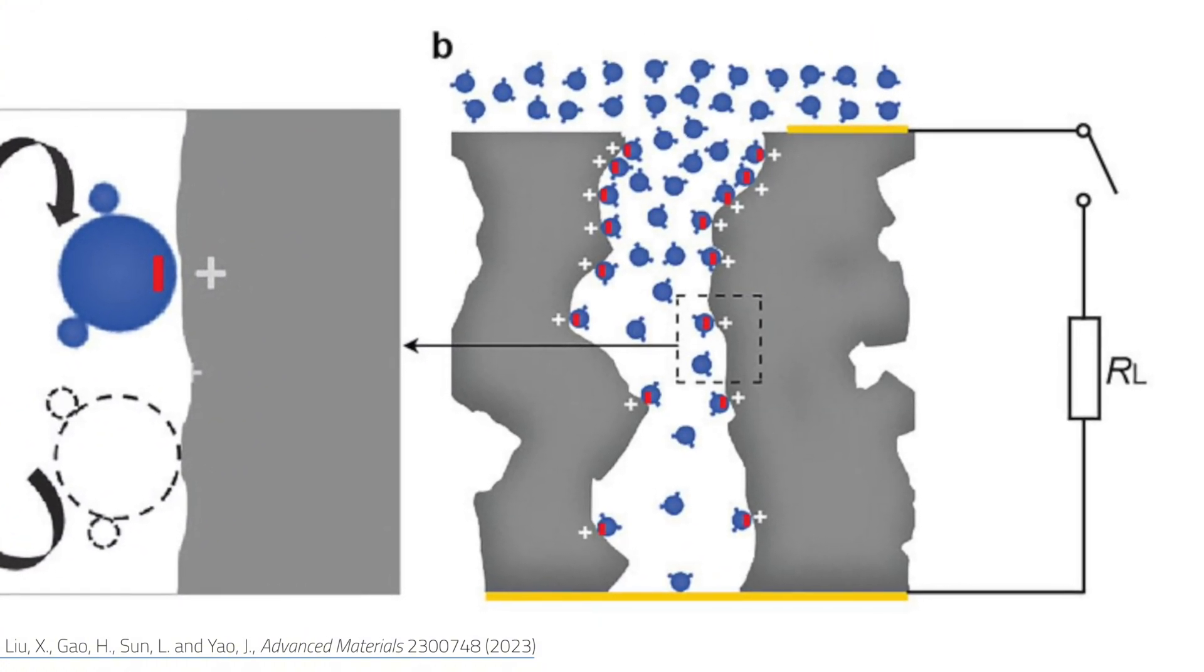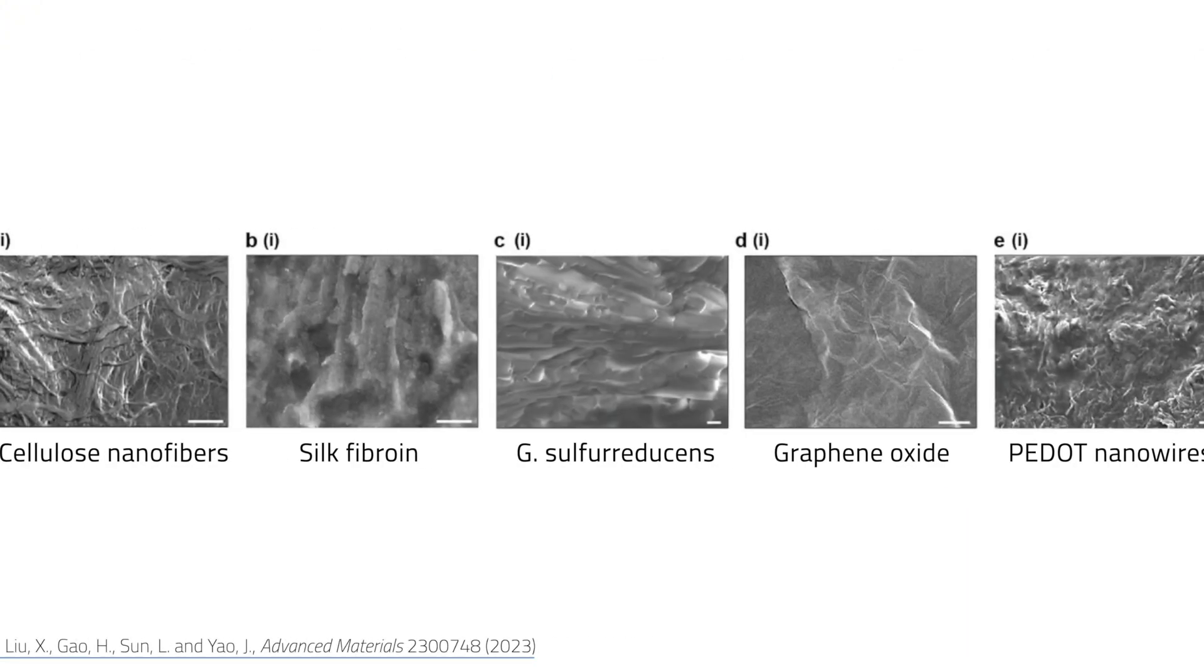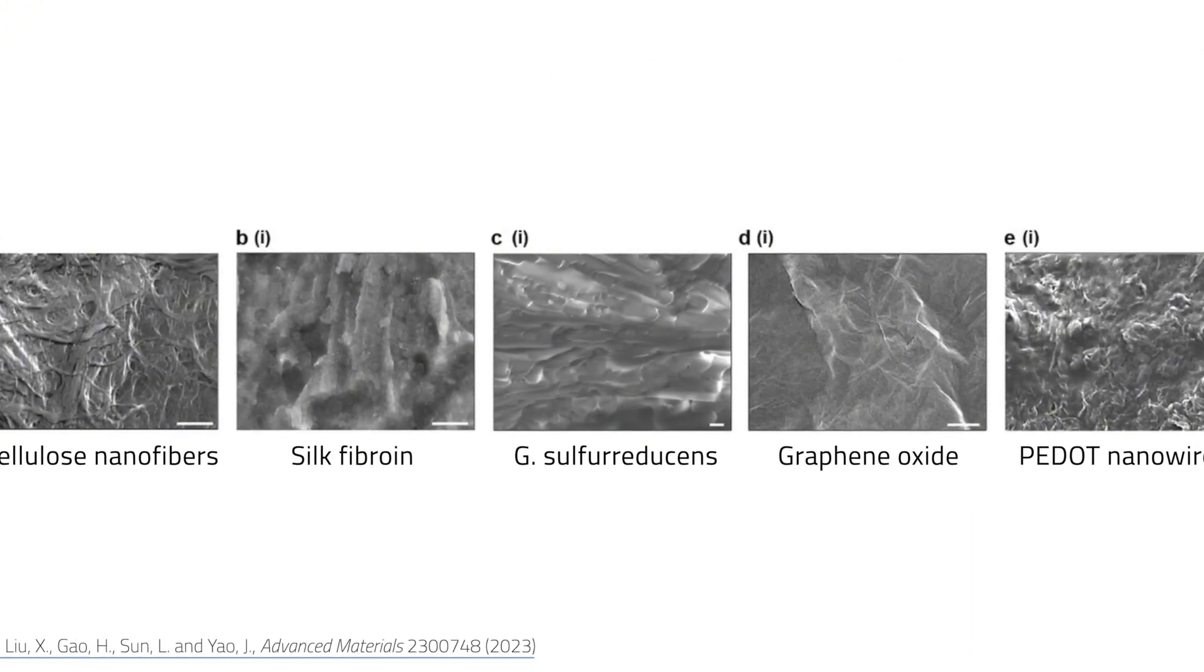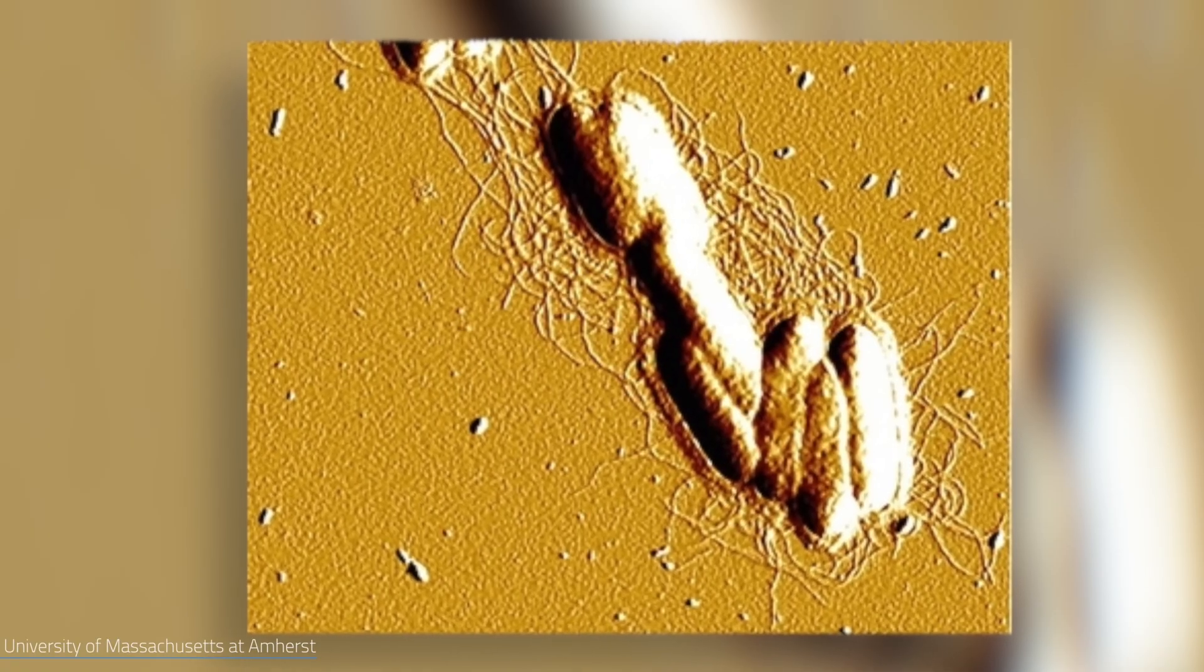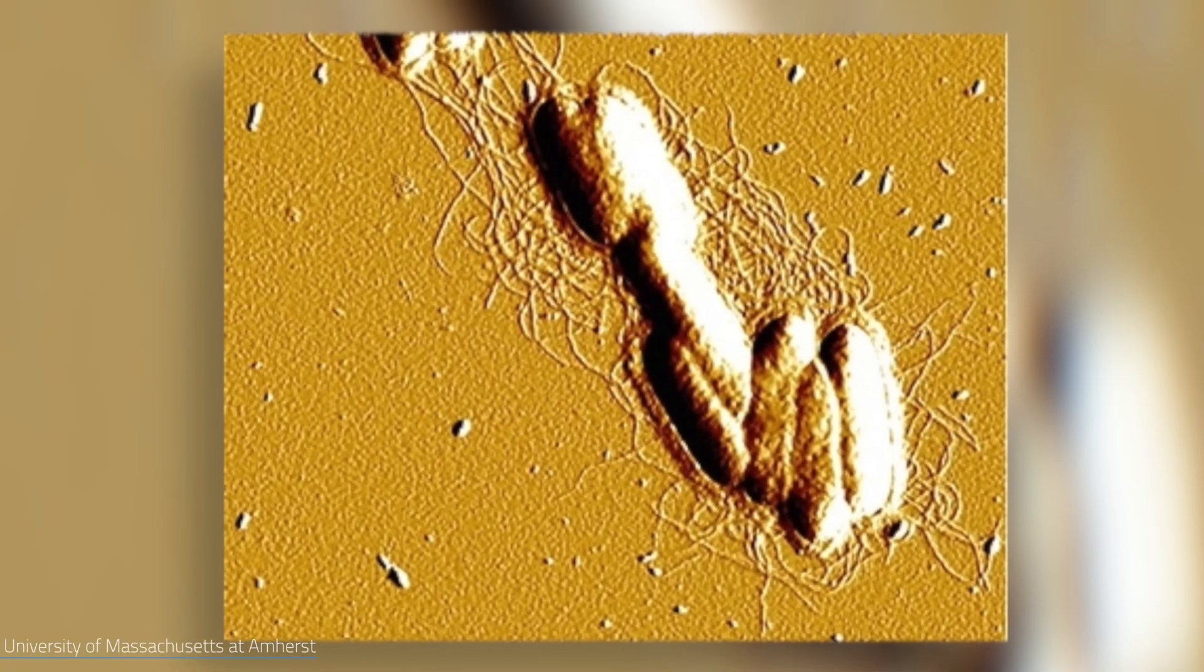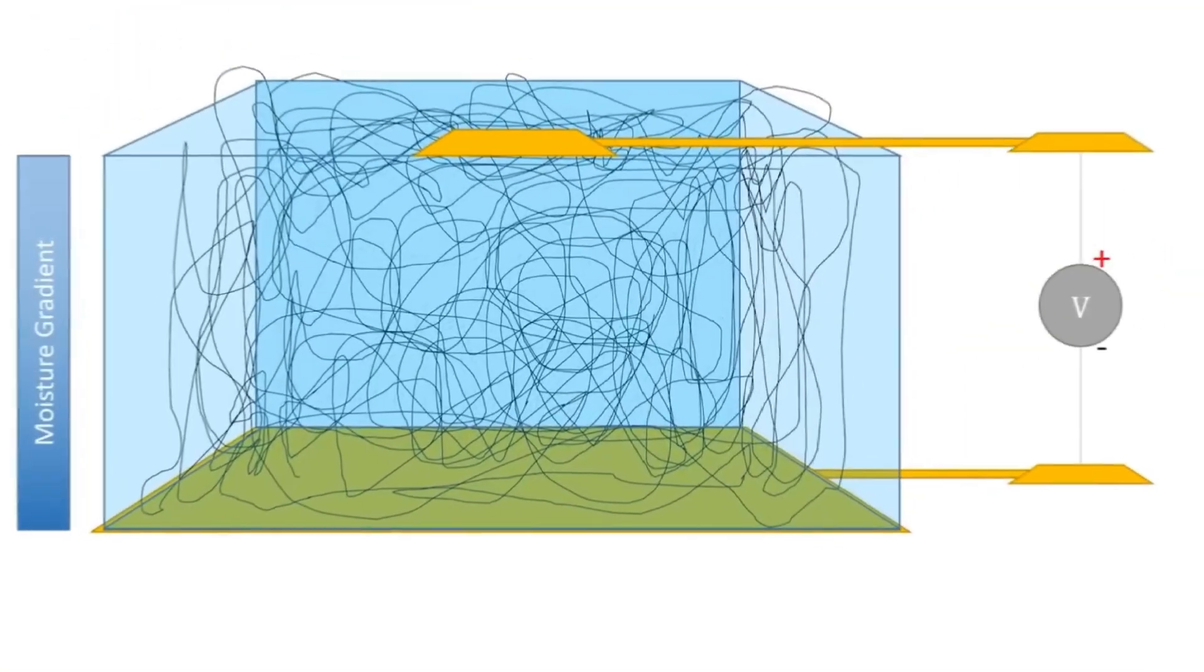The researchers then optimized their design by trying different nanostructure shapes and compositions. Remarkably, all attempts successfully harnessed electric power from humidity alone. This suggests the technology could be adapted using new breakthrough materials in the future to generate even more energy.